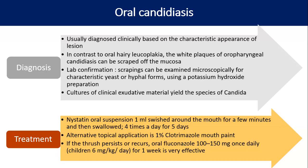Treatment is usually nystatin oral suspension, 1 ml, swished around the mouth for a few minutes and then swallowed four times a day for five days. Alternatively, we can apply local clotrimazole mouth paint — not cotrimoxazole, but clotrimazole. Or alternatively, we can use fluconazole 100 to 150 mg once a day for one week. In children, it is 6 mg per kg per day.